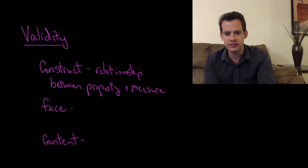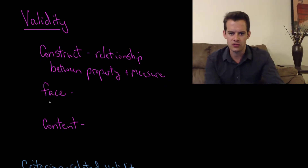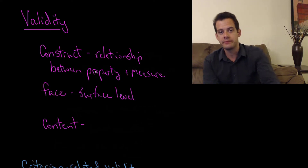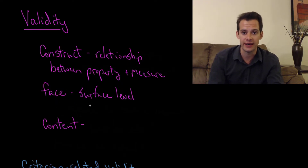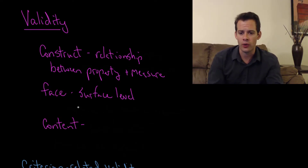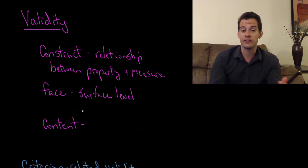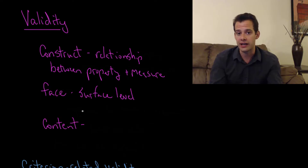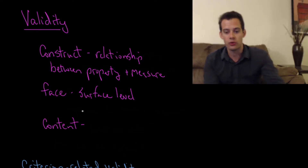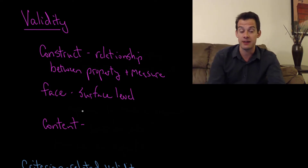Another way to think about an assessment is to look at it and ask: does it appear to measure what it says it's measuring? This is called face validity, and it's a surface-level assessment — not a detailed analysis. If I design an intelligence test with various problem-solving questions, you might look at it and say that looks like it could be an intelligence test, since intelligence is associated with problem-solving ability. For example, if I wanted to assess an artist's technical ability, I might give them a test of brush strokes — different brush techniques — and on the surface, that looks like a good test of artistic technique.